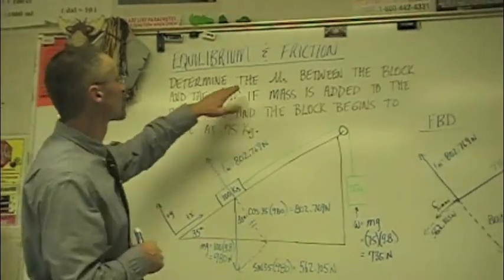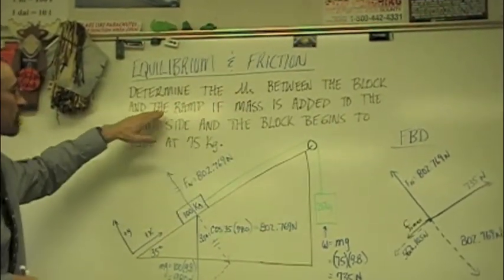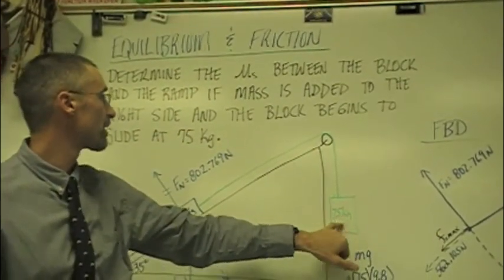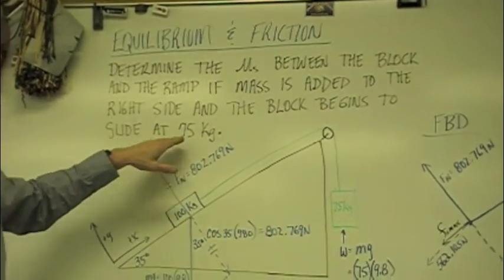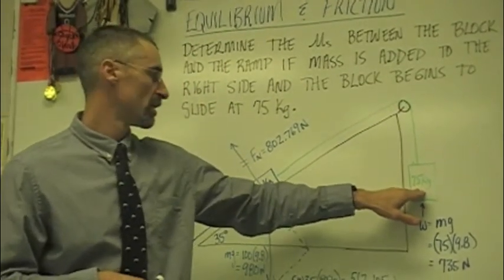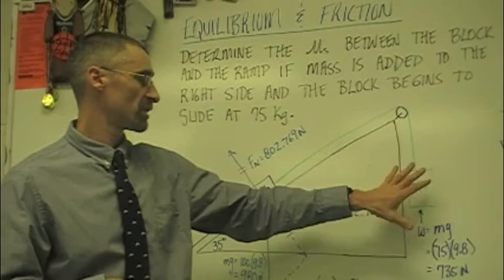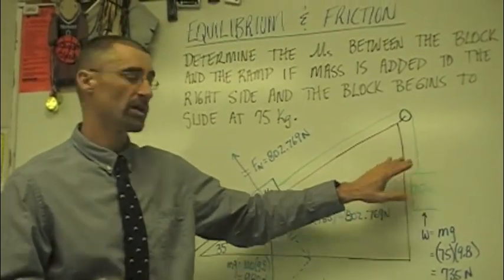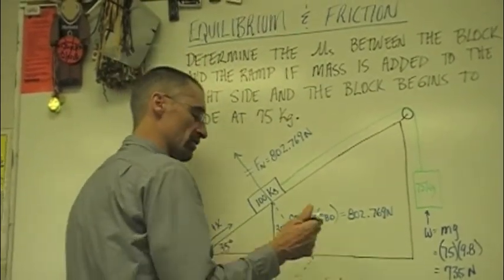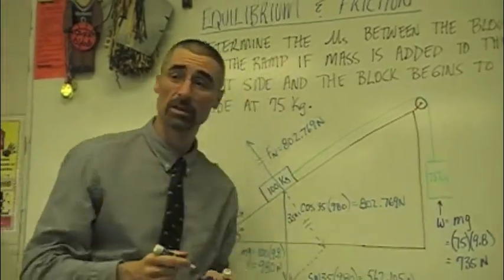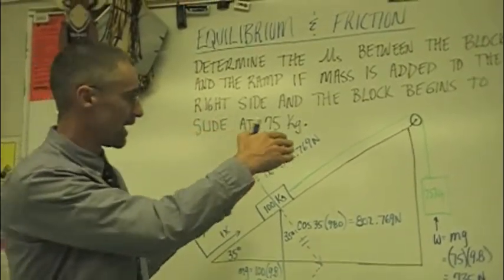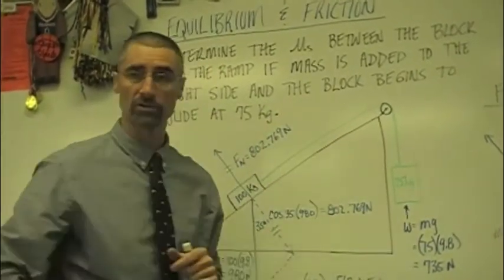If we look at this, it says determine the coefficient of static friction between the block and the ramp. If the mass is added to the right side, right here, we're going to add mass here, and the block begins to slide at 75 kilograms. So if we had 50 kilograms here, it would just stay stationary. 60 kilograms, 70, and we get to 75 kilograms, this thing finally starts to slide. This right here is a pulley, so it's going to allow the string to roll, and these things will slide like that, those two blocks.